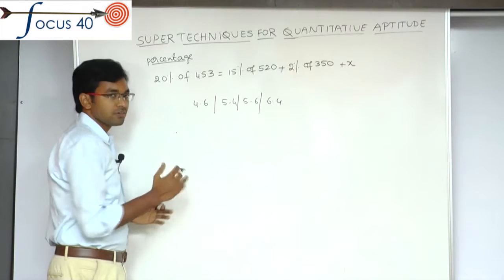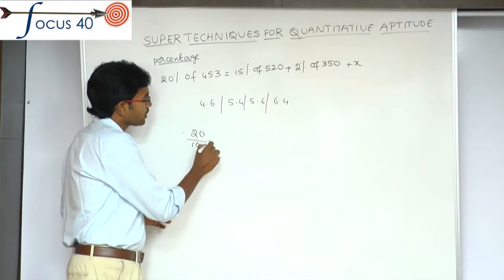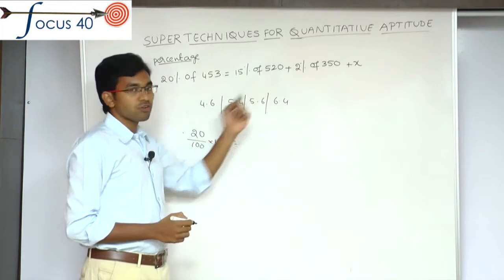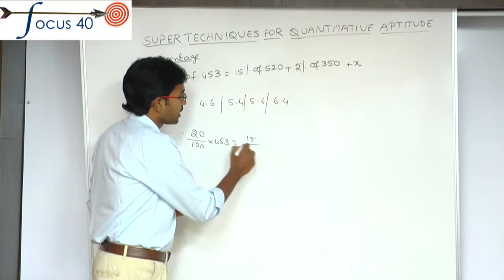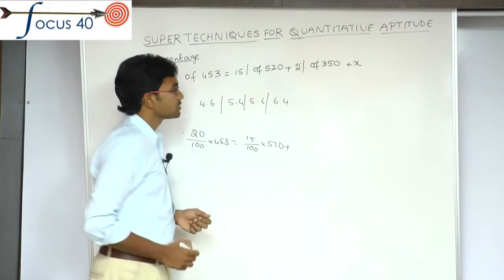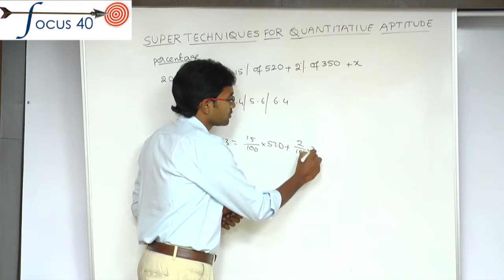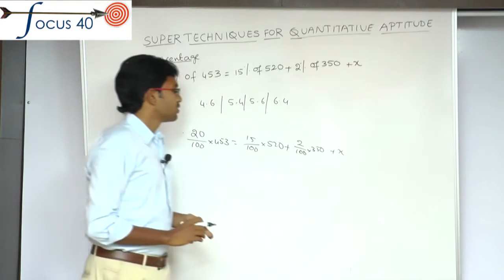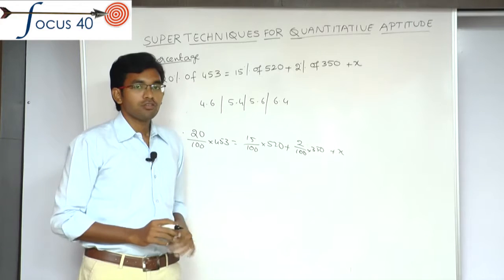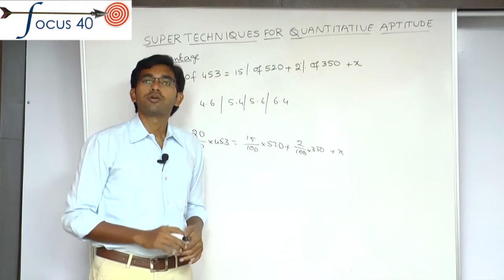20% of 453, we will write that as 20 by 100 into 453 equal to 15% of 520. That is 15 by 100 into 520 plus 2% of 350. That is 2 by 100 into 350 plus x. After simplifying this equation, we will get the value of x. But this is not the process we need to do in competitive exams.